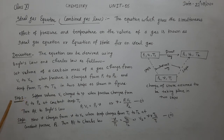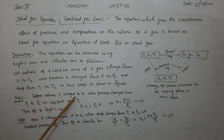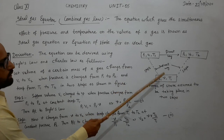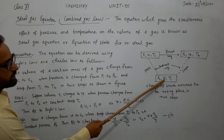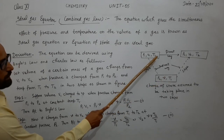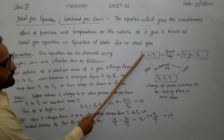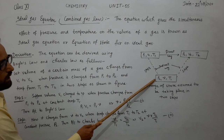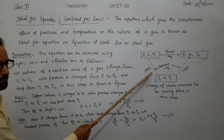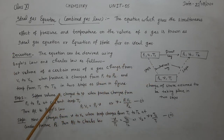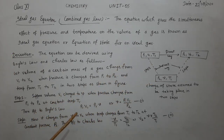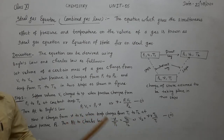In step 1, suppose volume V1 changes to an intermediate volume V at constant temperature T1 while pressure changes from P1 to P2. Applying Boyle's law: P1V1 = P2V, so the intermediate volume V = P1V1 ÷ P2.